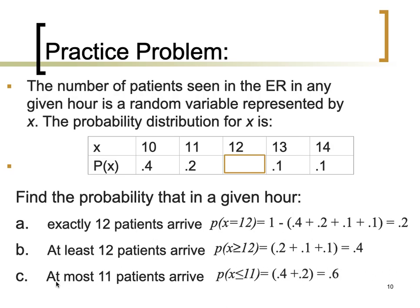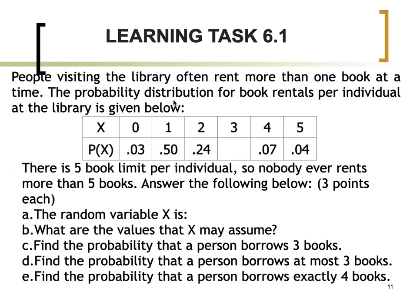For the probability of at most 11 patients, the maximum is 11, so x can be 10 or 11, represented as P(x ≤ 11). Summing their probabilities: 0.4 + 0.2 = 0.6. Note that we use a capital letter P to denote the probability of a given random variable x. For your learning task, apply what we have covered in this module.